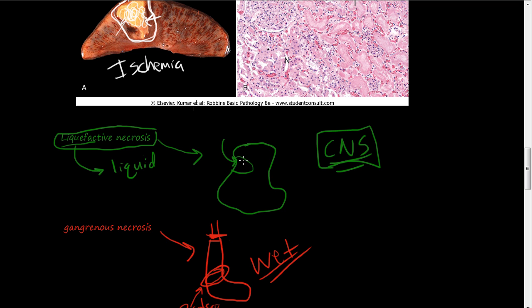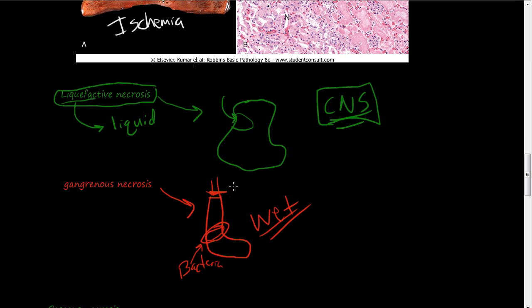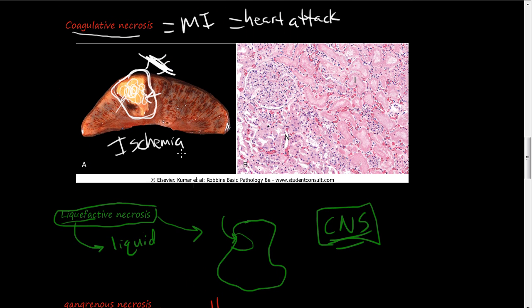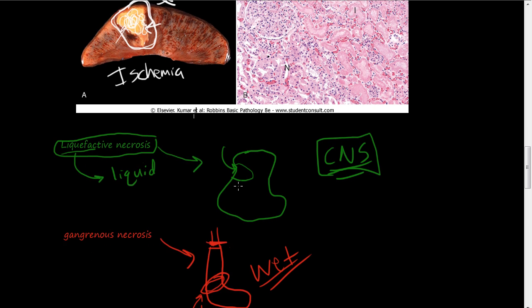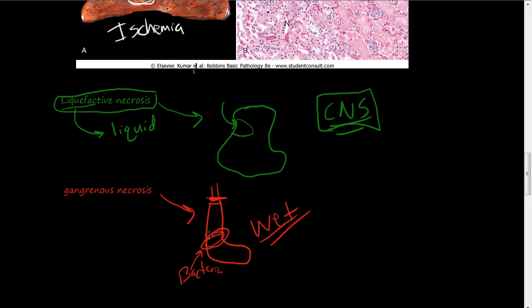Liquefactive necrosis is where usually a bacterial infection will cause this and it turns the tissue to more of a liquid type of substance. And gangrenous necrosis is actually a subset of coagulative necrosis and it refers to lower limb ischemia usually. And if bacteria gets involved then it's called wet gangrene.